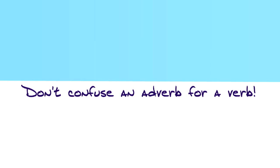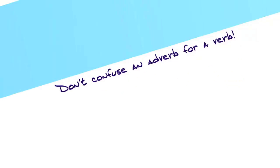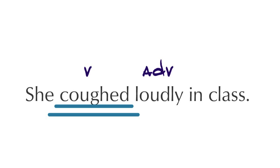There are some other things to consider when looking for the verb in a sentence. First, don't confuse an adverb for a verb. Remember that adverbs describe how an action is done and usually end in -ly. Take the example 'she coughed loudly in class.' Loudly is not the verb because it is an adverb — it describes how she coughed. A proper sentence must have a verb but not necessarily an adverb. Therefore, you could remove the word loudly and the sentence would still make sense: 'she coughed in class.' However, you could not remove the word coughed and still have the sentence make sense: 'she loudly in class.' Therefore, you know that coughed is the verb.